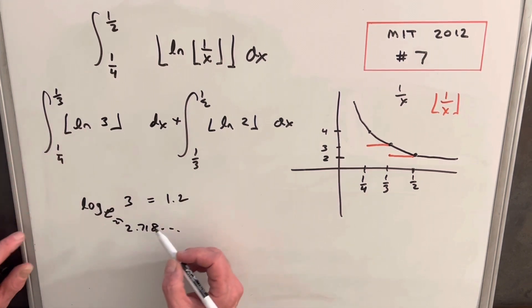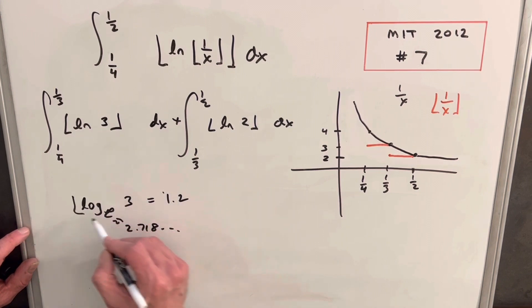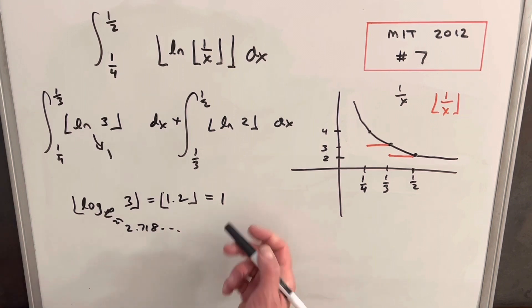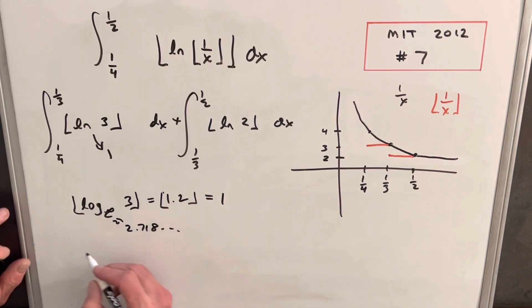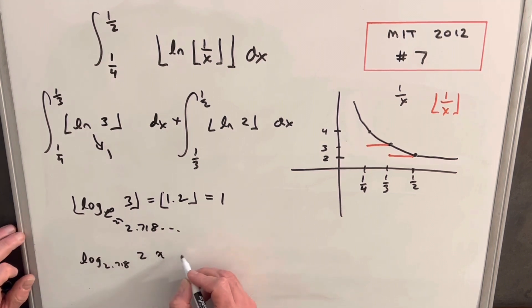But remember, we have the floor around this whole thing. So the floor, if we have the floor around this, and we have the floor around 1.2, that's just going to take us down to one. And then we can do the same kind of thing with natural log of two. So if we look at it as log base 2.718 of two. Well, looking at this, this has to be less than one. Because if it was one, it would be 2.718. It turns out this value is approximately 0.69 something.